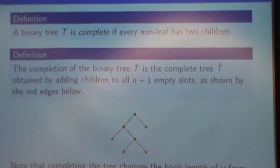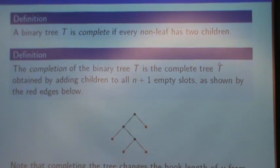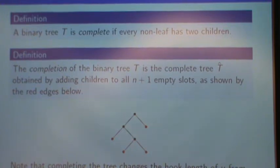Assign children to all the empty slots. If you have a tree with n vertices, there are n plus 1 empty slots. The reason that this procedure is done with a canonical procedure, by assigning children to all the empty slots, we get an invertible procedure. To complete a tree, you assign children to all the empty slots. To convert the completion of the tree back to the original tree, you chop off all the leaves.